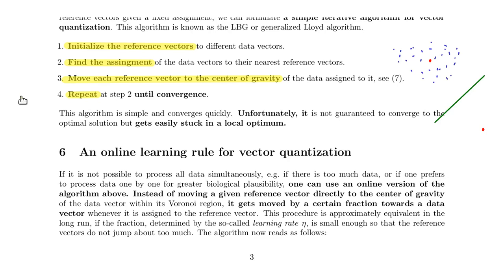The algorithm we've seen in the first part is very efficient — it's a batch algorithm because it processes all the data simultaneously. However, there may be cases where the data are not all available at the same time, or you want to learn even though not all data is available yet. The data might come one by one, or the dataset is so large you can't process it all at once. In these cases, you would like an online learning rule for vector quantization — a rule that can perform proper vector quantization even though you present only one data point at a time.